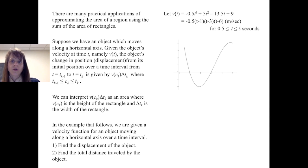Our velocity function that we'll use is v(t) = -0.5t³ + 5t² - 13.5t + 9, which we'll say is in meters per second. And we also have it in a factored form, because sometimes factored form makes it easier to do computations. Here's a graph of the curve on the interval from 1/2 to 5 seconds.